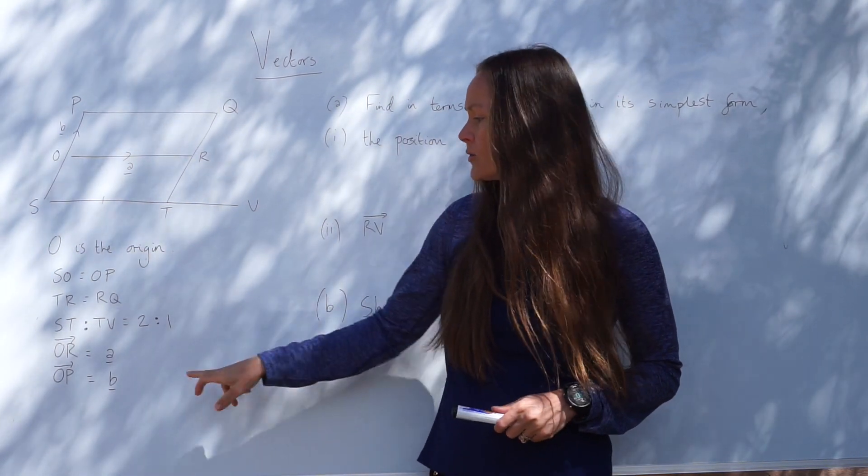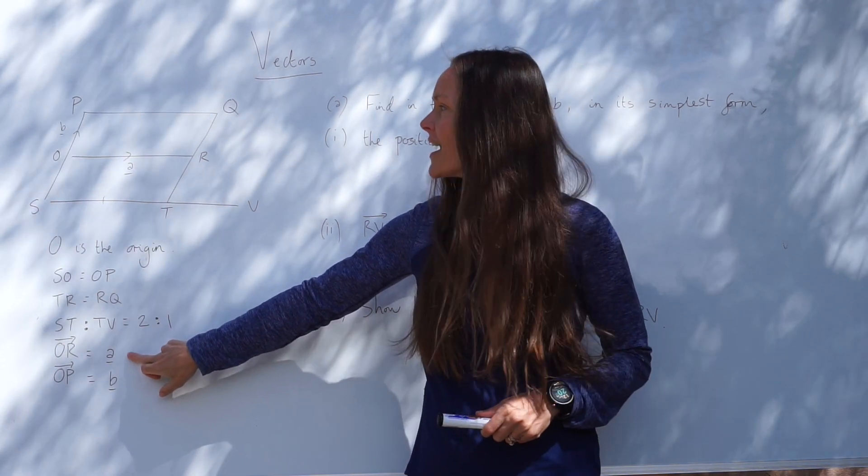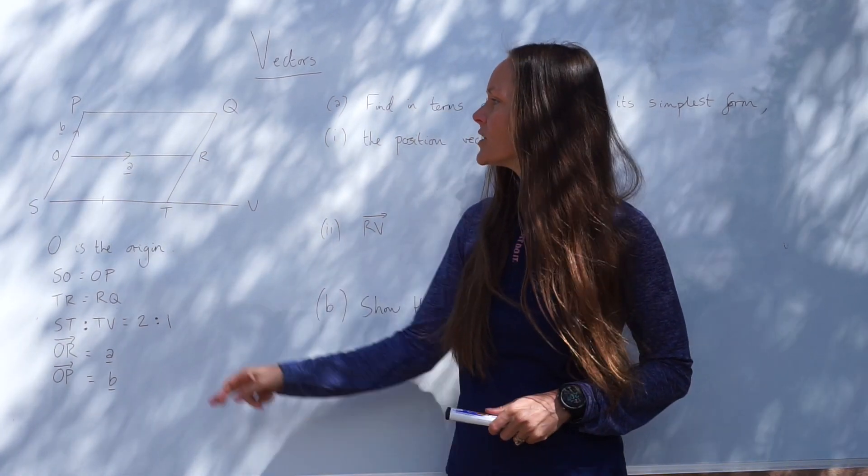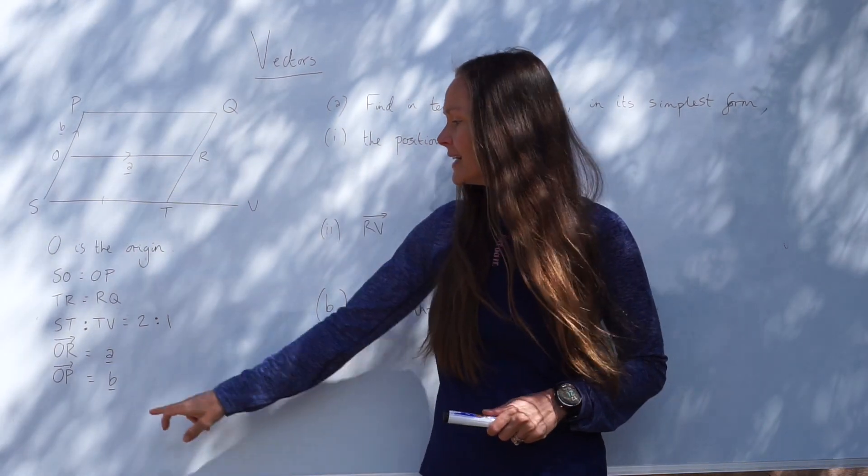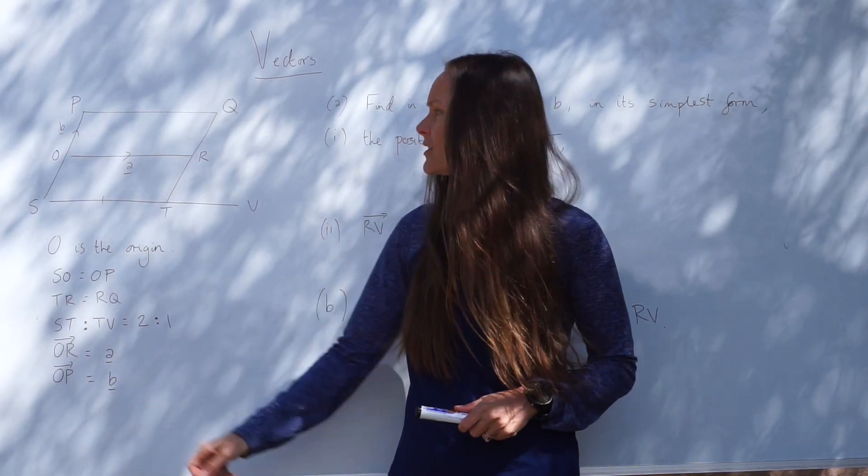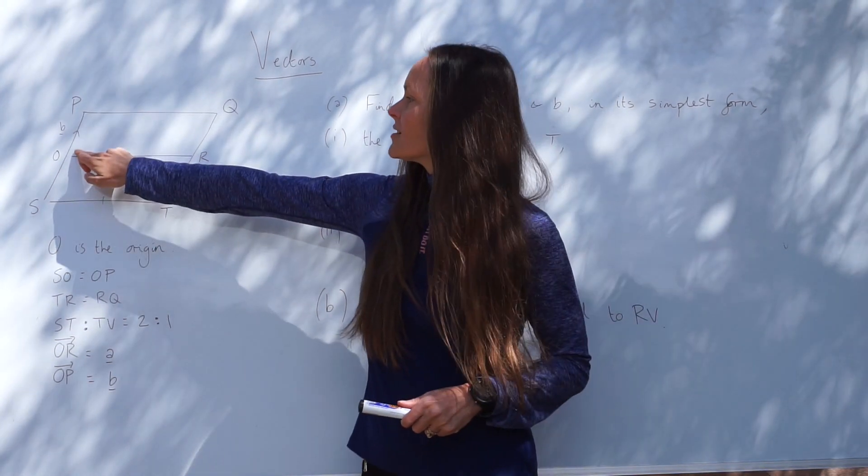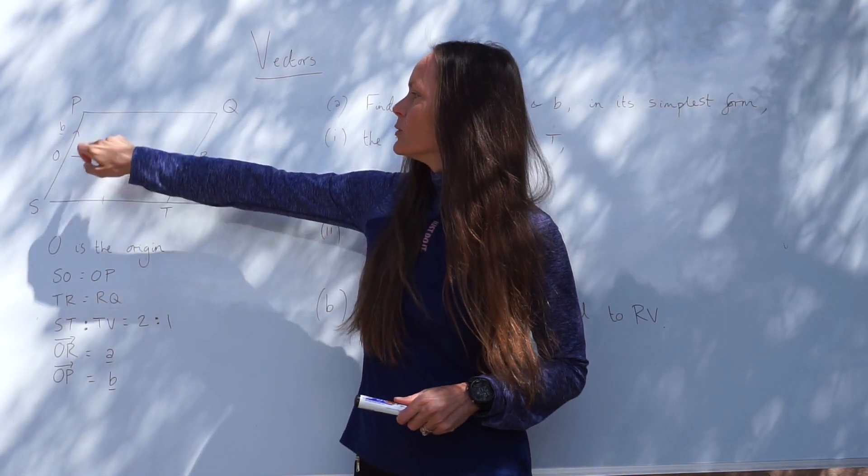We also know that O to R is equal to vector A, and that's labelled on the diagram here. And finally, O to P is equal to vector B, so just this part here is equal to vector B.